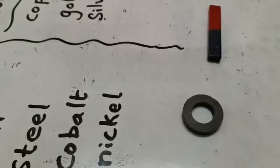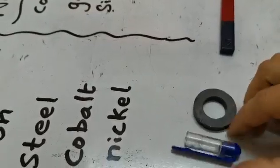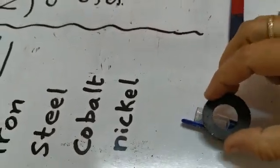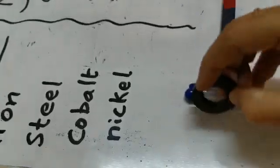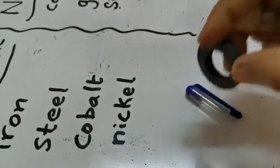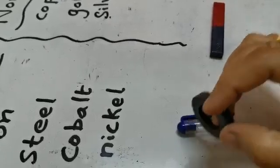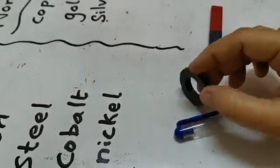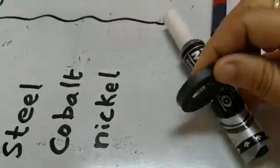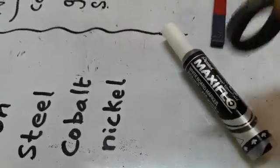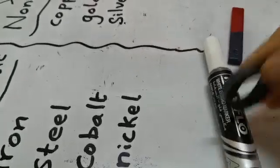But what about this plastic pen top? What's your opinion — will it be attracted? Can anyone guess? See, it's not attracting towards this magnet; it is not taking the pen top. So it's a non-magnetic material. You can try with many things at your home. This pen is also made of plastic, so it's not magnetic.